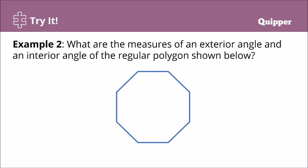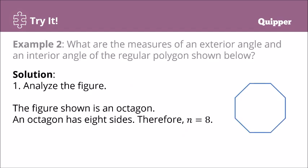Example 2: What are the measures of an exterior angle and an interior angle of the regular polygon shown below? Counting the sides: 1, 2, 3, 4, 5, 6, 7, 8. It's an octagon — a regular octagon. The number of sides is n equals 8. Since it's a regular octagon, all interior angles are equal and all exterior angles are equal. Finding one of each gives us the measurement for all of them.